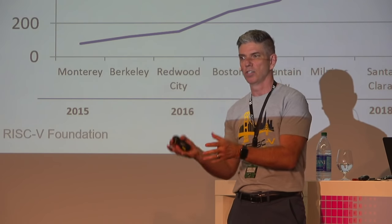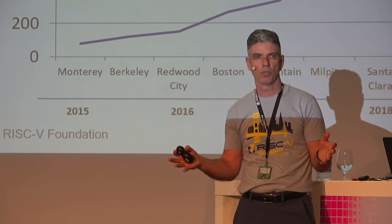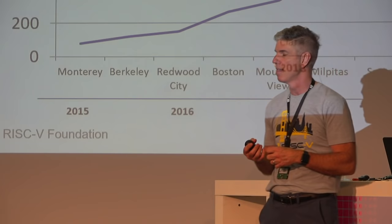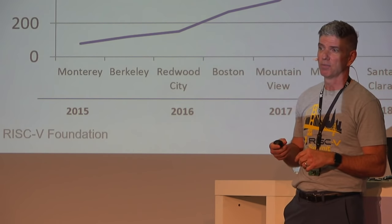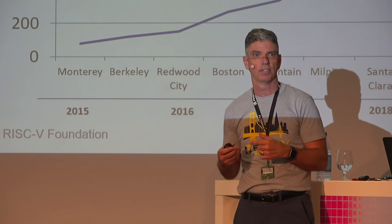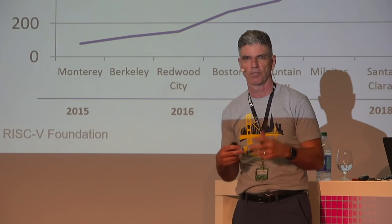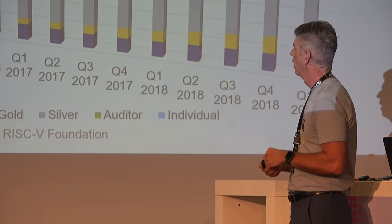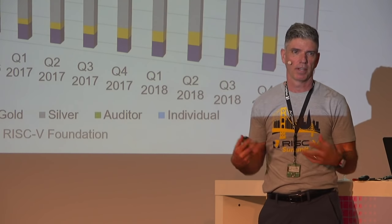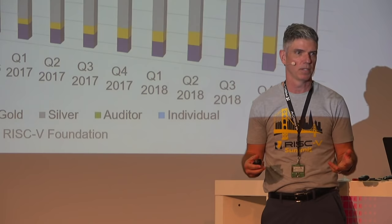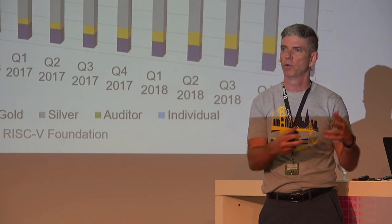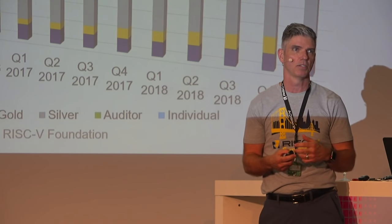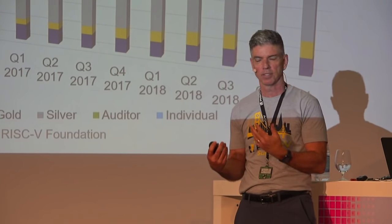It wasn't just papers — we had a little exhibit space with 30 companies with booths demoing commercial product available for sale. We had 250 abstracts submitted that got translated into 59 sessions across three parallel tracks. Another proxy is membership growth — in the last 12 months we've come close to doubling membership in the foundation. You don't have to be a member to use RISC-V, but if you want to participate in how the specs are evolving, what the roadmap looks like, and marketing activities, then you'd be a member.